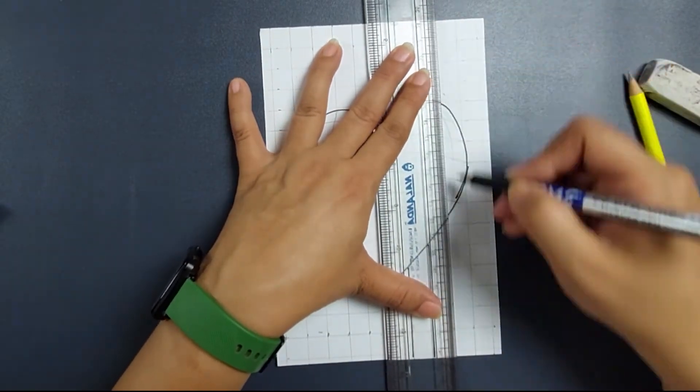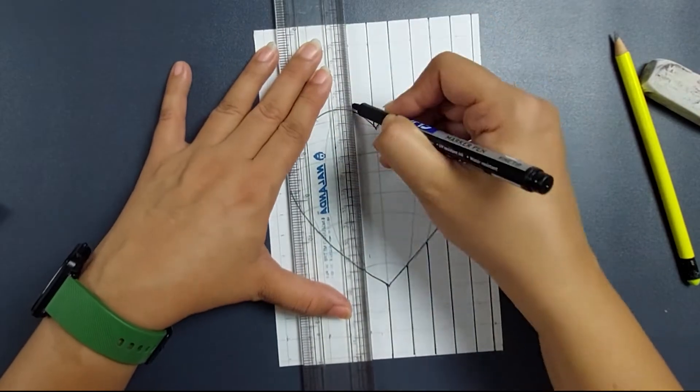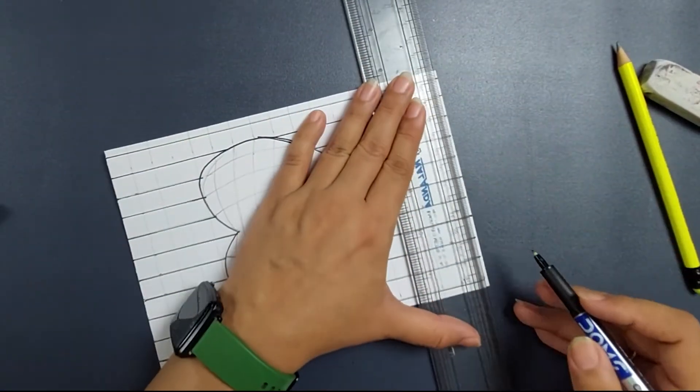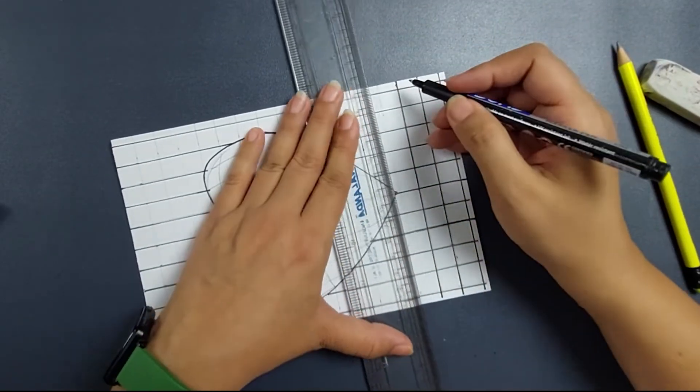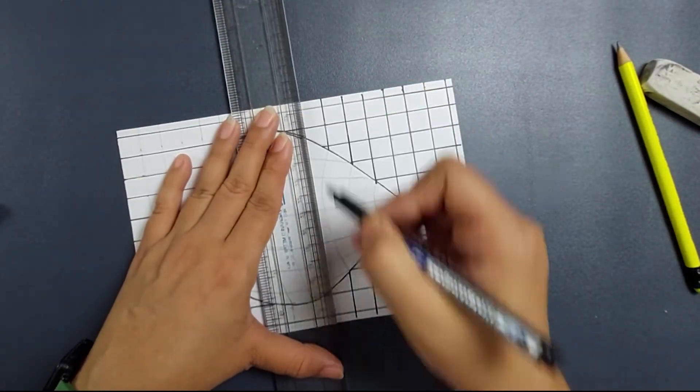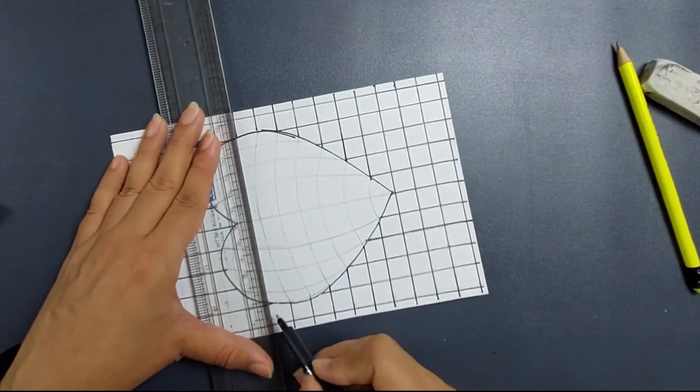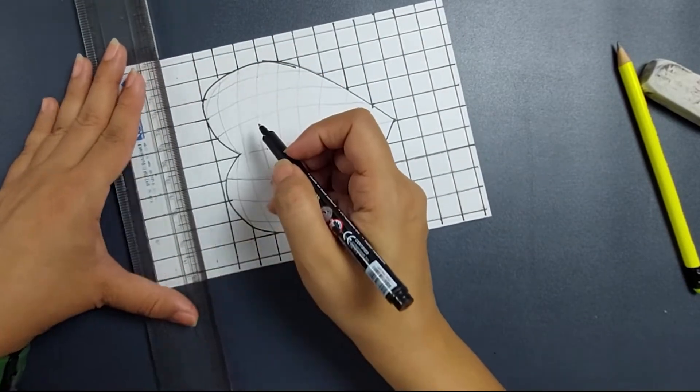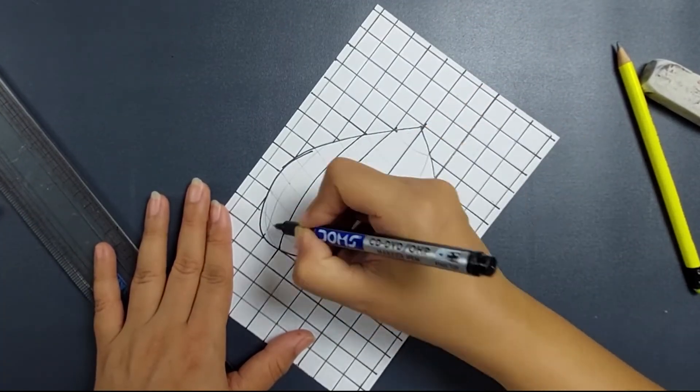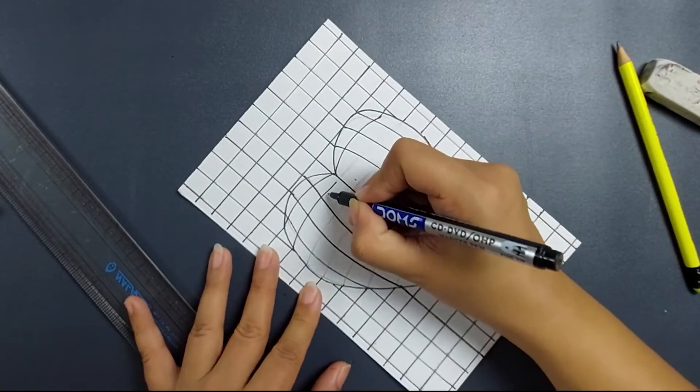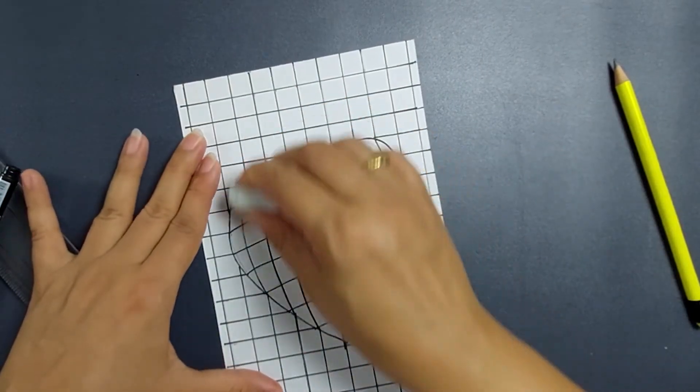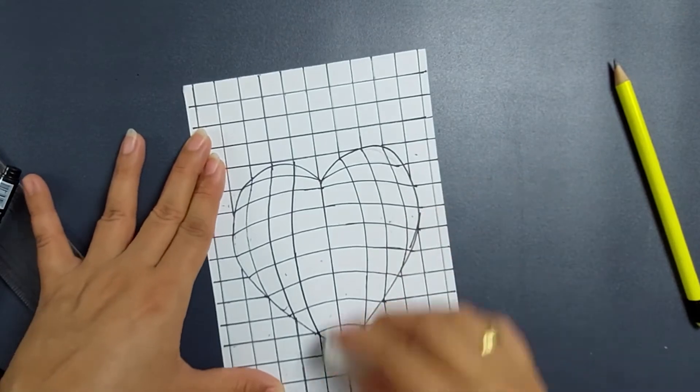Outline the whole thing with a black pen. Now what we can do is we can just erase these lines which we have done with the pencil.